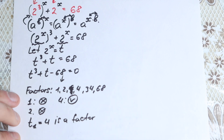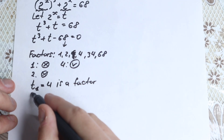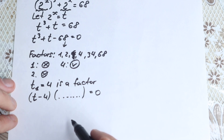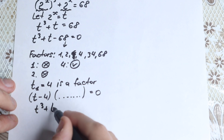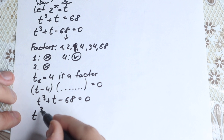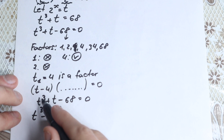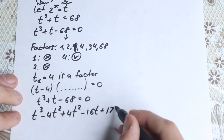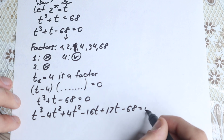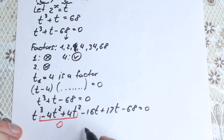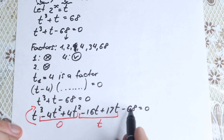Now we need to find the other factor. We rewrite t cubed + t - 68 by adding and subtracting terms: t cubed minus 4t squared, plus 4t squared minus 16t, plus 17t minus 68. Notice that minus 4t squared plus 4t squared cancels to zero, and minus 16t plus 17t equals t, so the expression is unchanged.